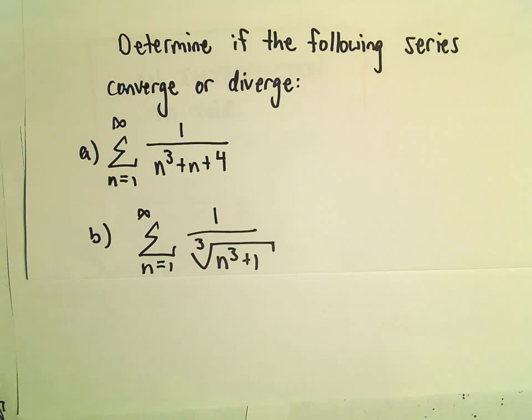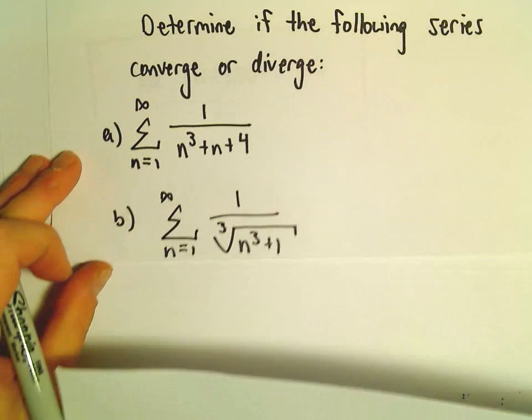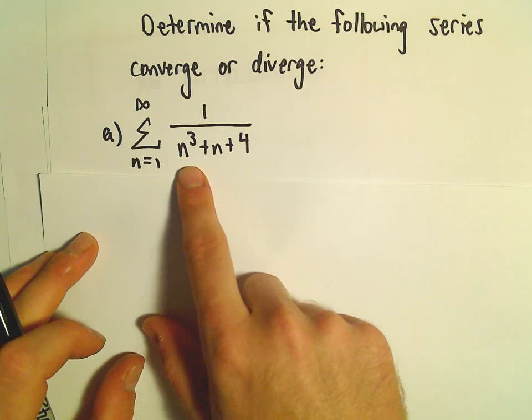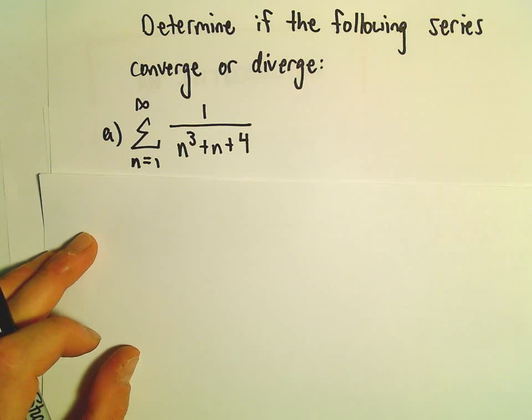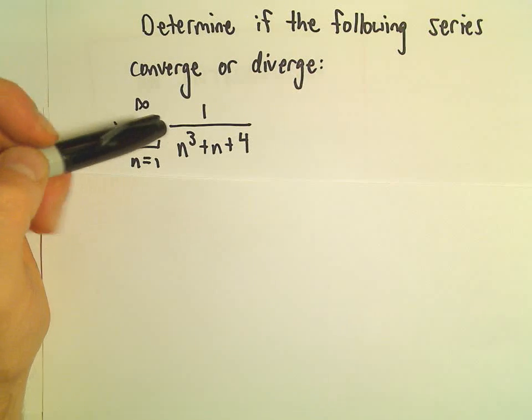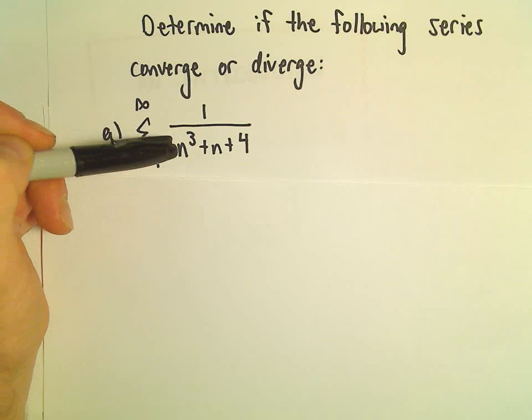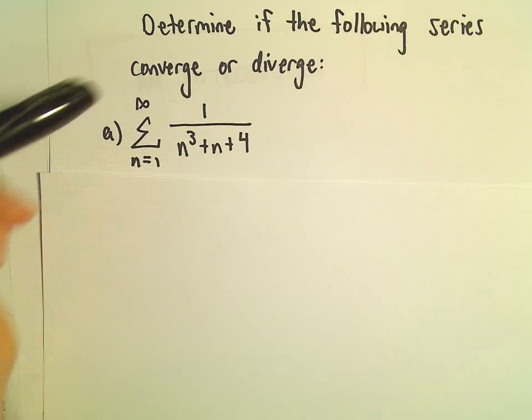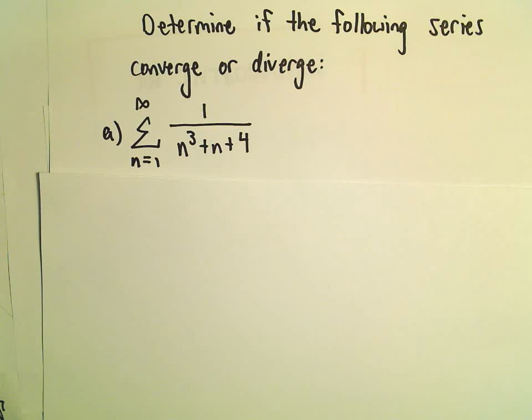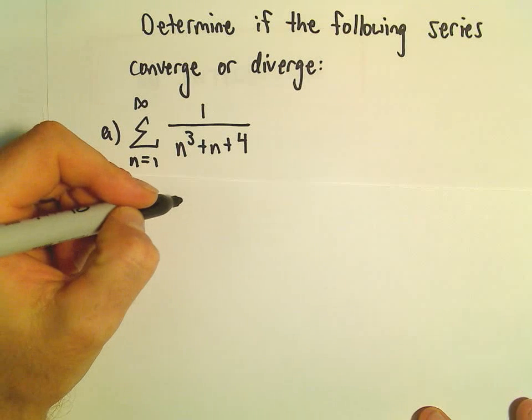So in this case, I usually pick out dominant terms - the biggest powers. In the top, there's just a 1. In the denominator, there's n cubed. And if you think about the series 1 over n cubed, that would be a convergent p-series.